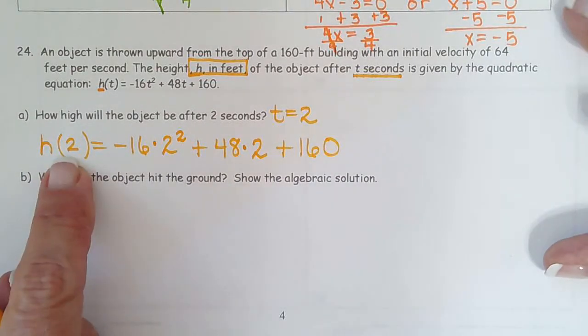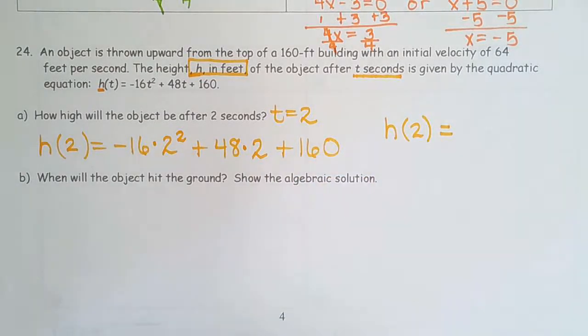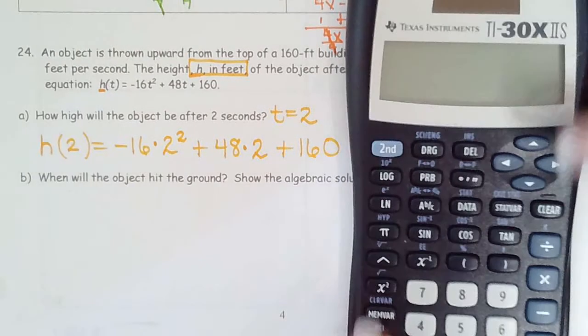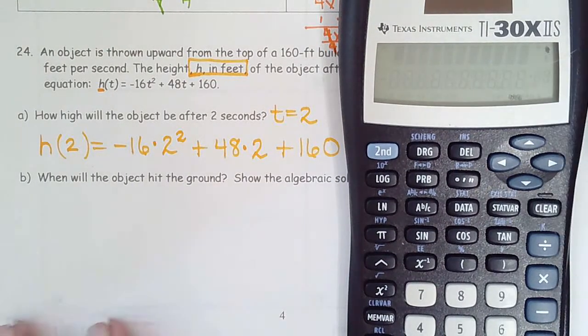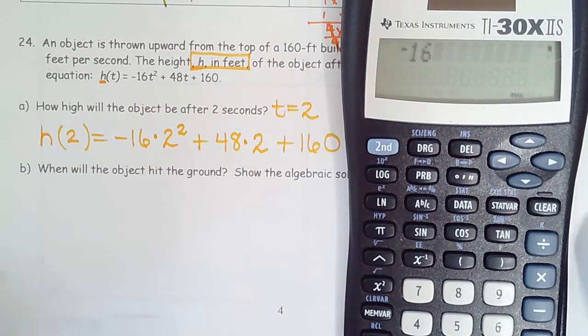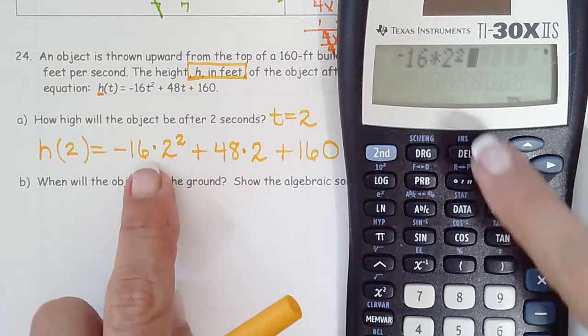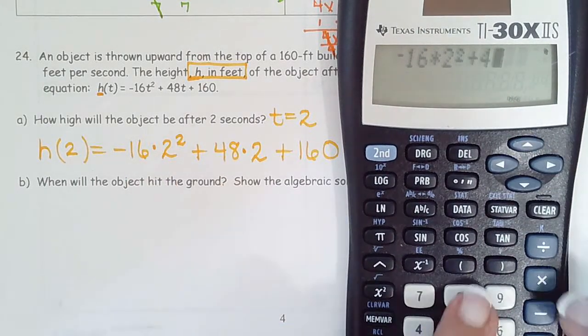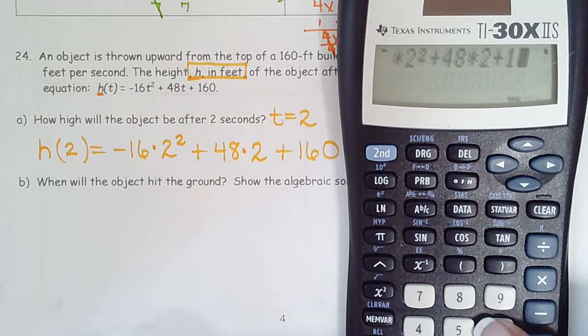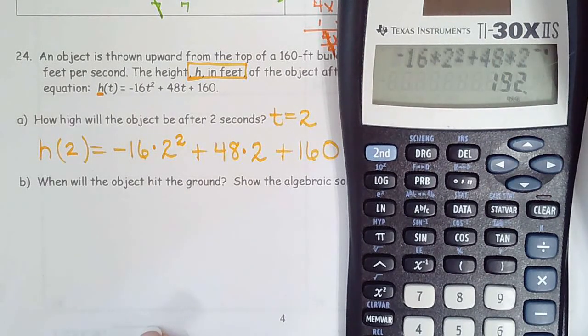So this is just notation, the height after 2 seconds. The rest we can do on the calculator, but we do have to make sure we label everything after we're done. So we're ready. So we're going to type in negative 16 times 2 squared x squared. So that looks good. Plus 48 times 2 plus 160. And you don't have to do it piece by piece. You can do it all at once. So 192.